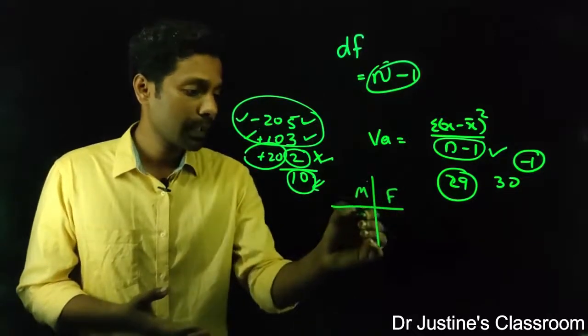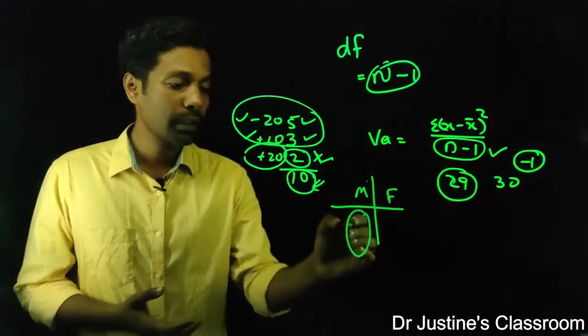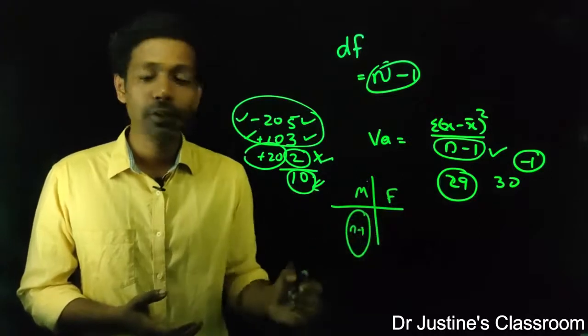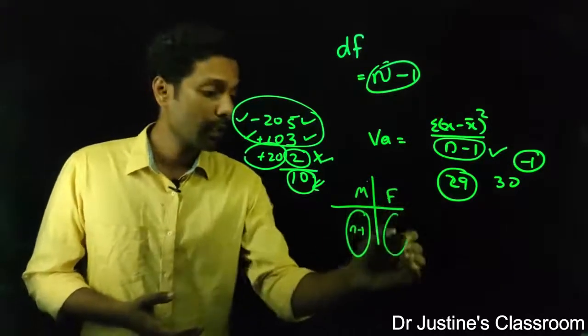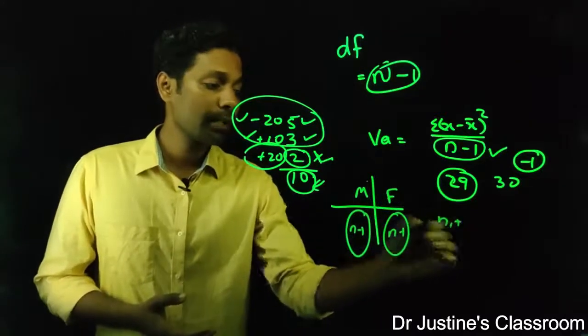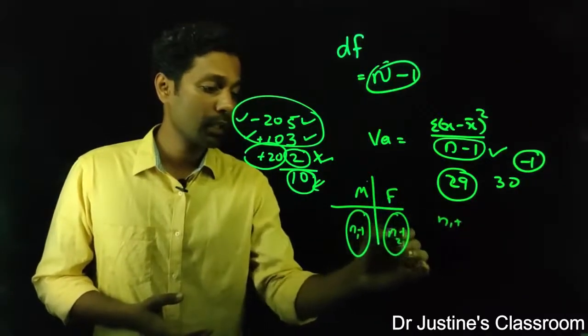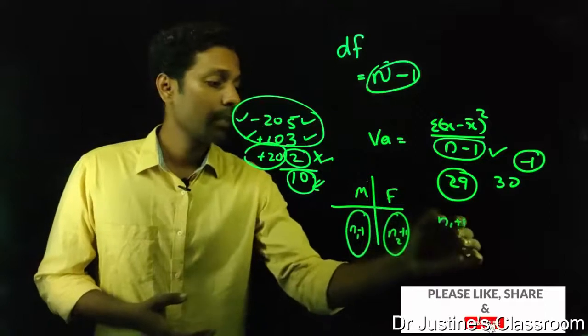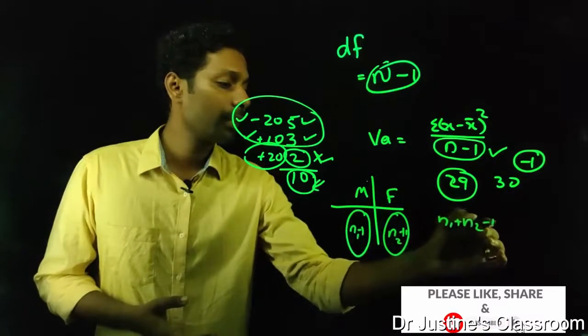So for example, take this group. You will get n minus 1, that means variance of first group and the second group, you will get n minus 1. So together, n1 plus n2 minus 1 minus 2.